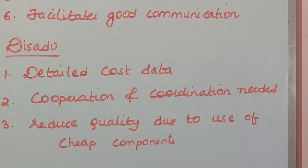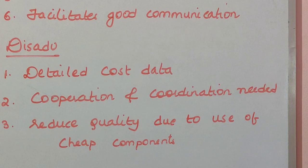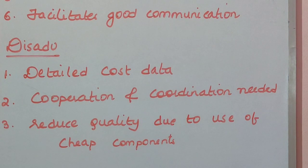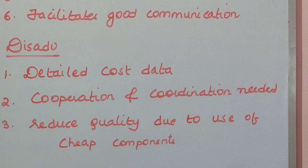The second disadvantage is the need for cooperation and coordination. To implement target costing, you need the cooperation and coordination of all employees in the organization — only if all employees and management work collectively can this model be implemented. The third disadvantage is reduced quality due to the use of cheap components: since the selling price is fixed first and the cost is bound to that selling price, there are chances the organization will use cheap components in order to match the target cost.